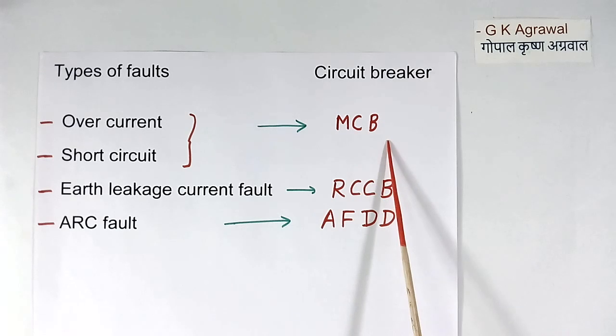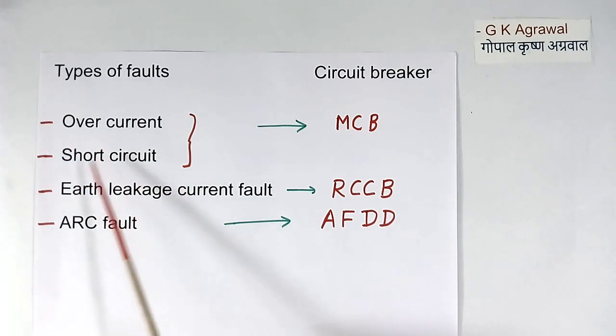MCB breaker is used for over current and short circuit protection. RCCB breaker is used for leakage current fault protection. And AFDD breaker, which is under discussion now, is used to protect from arc fault.